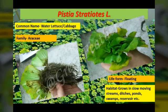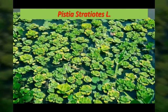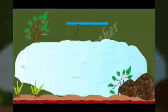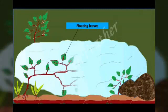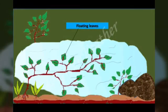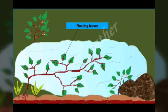Coming next to the floating-leaved form, these are aquatic plants that are rooted at the bottom but have their leaves floating on the water surface. The floating leaves absorb carbon dioxide and sunlight for photosynthesis and are attached to the roots by flexible stems to withstand waves.